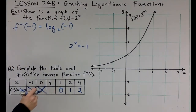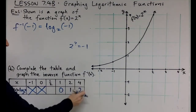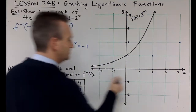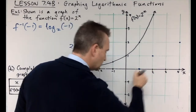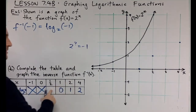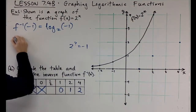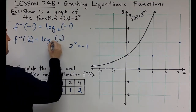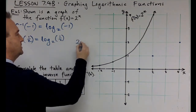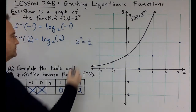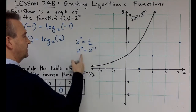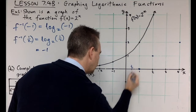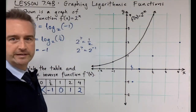Let's also try x equals one half. First, let's graph what we have: the points (4, 2), (2, 1), and (1, 0). It's not a straight line — it's curling down. For x equals one half: log of one half base 2 means 2 to the power of what equals one half. One half is 2 to the minus 1, so the answer is minus 1. That gives us the point (one half, negative 1), which sits down below.